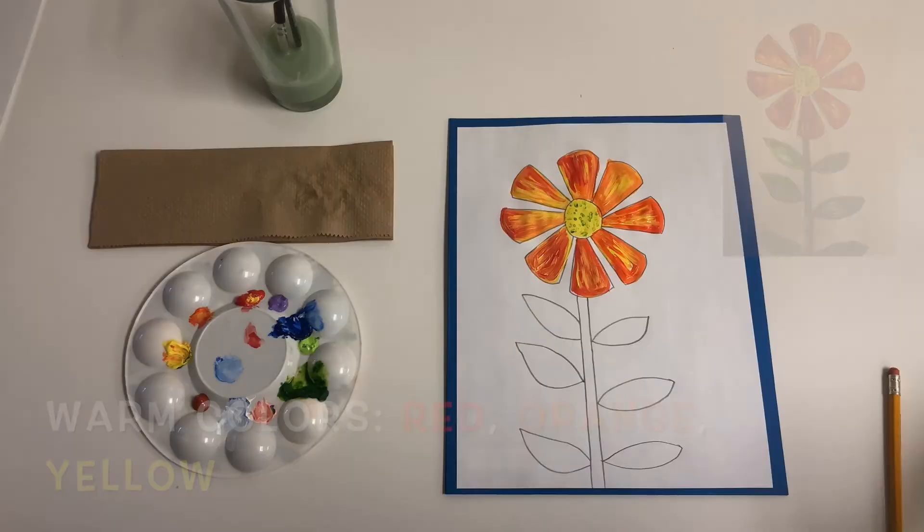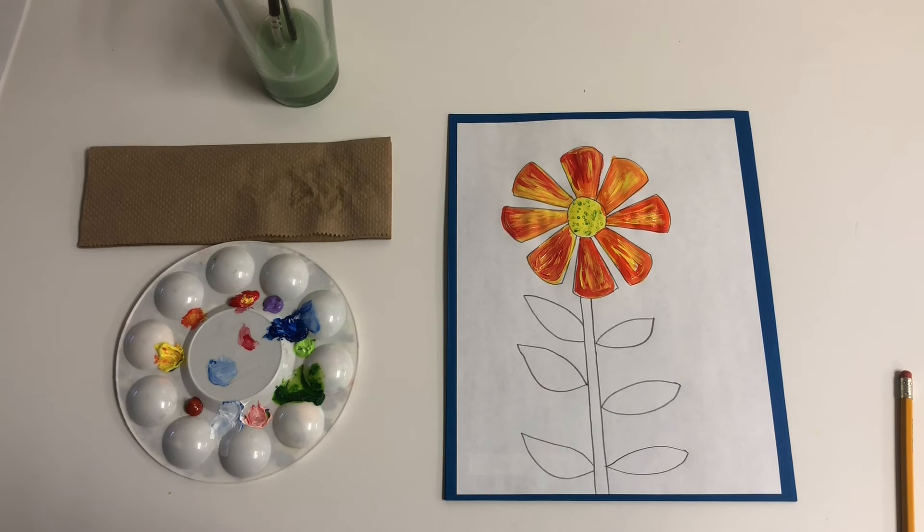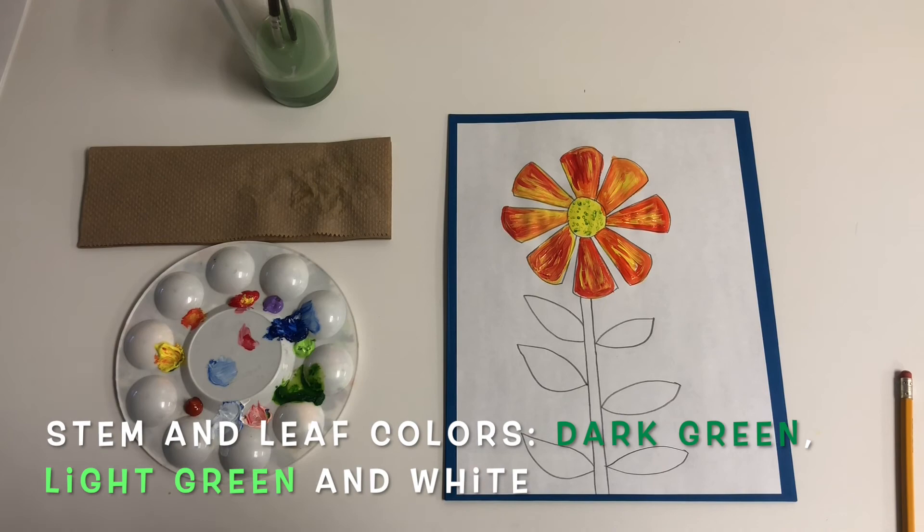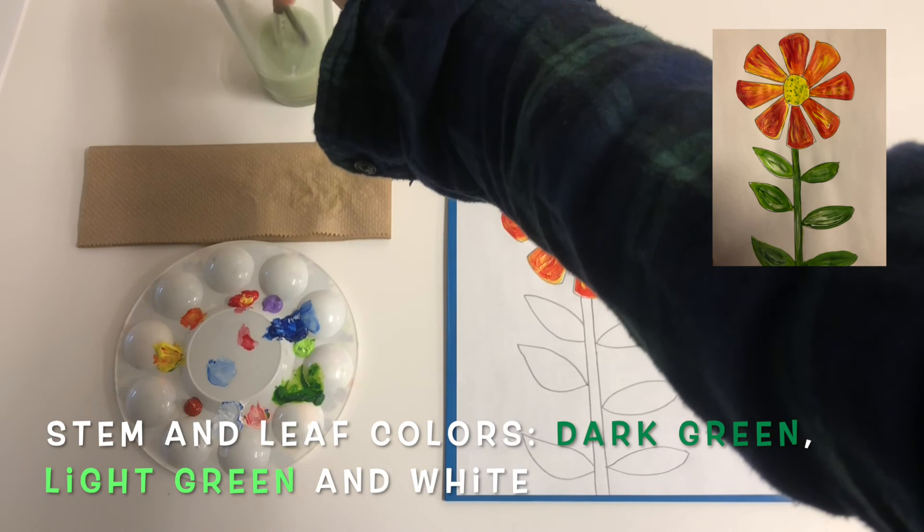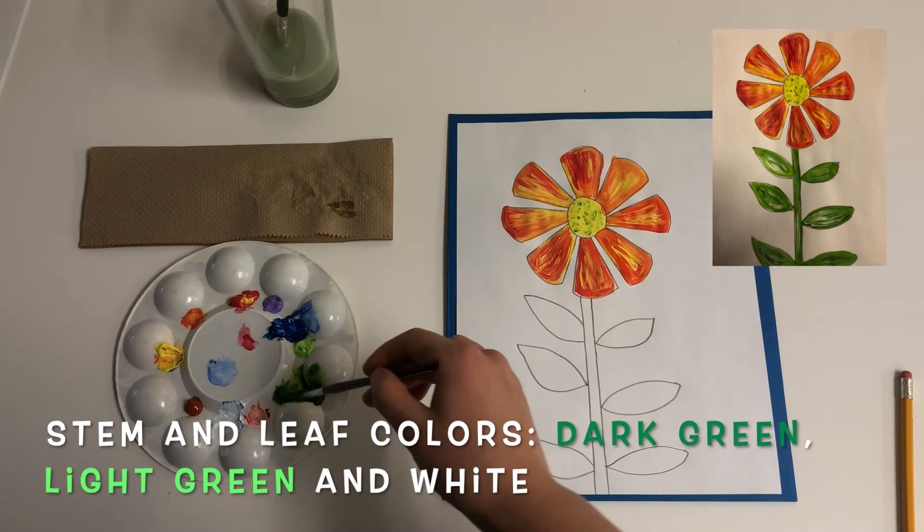Okay, so now that our petals are painted, we are going to paint the stem of our flower. So the stem of our flower is going to be a different green, so a dark green, a light green, and then we will add some white in as well. So I am just going to rinse my brush, very carefully scrubbing the bottom of the container. Make sure to check that it is clean.